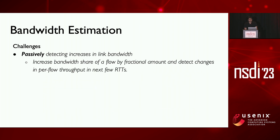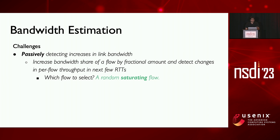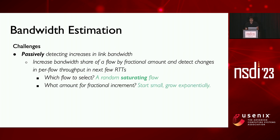So to get around it, we periodically do passive bandwidth probing. We increase the bandwidth share of a flow by a fractional amount and detect changes in per-flow throughput in the next few RTTs. Which flow should we pick for bandwidth probing? We pick a random saturating flow — a saturating flow is one that is utilizing all its previously assigned share of bandwidth, which signals that it can probably grow more and can help us with bandwidth probing.